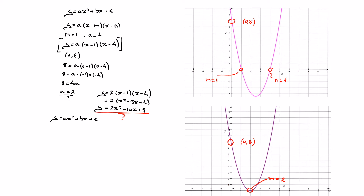What root factoring tells us is that if a parabola only touches the x-axis in one point, we can factor its equation as y equals a times x minus m squared. Since m equals two, that's y equals a times x minus two squared.